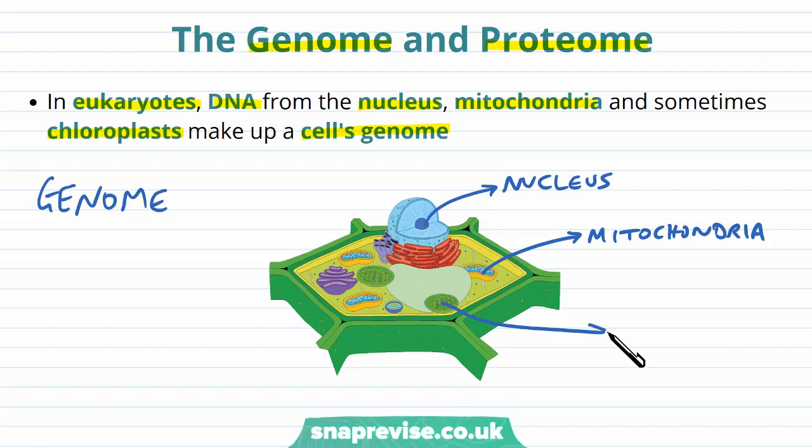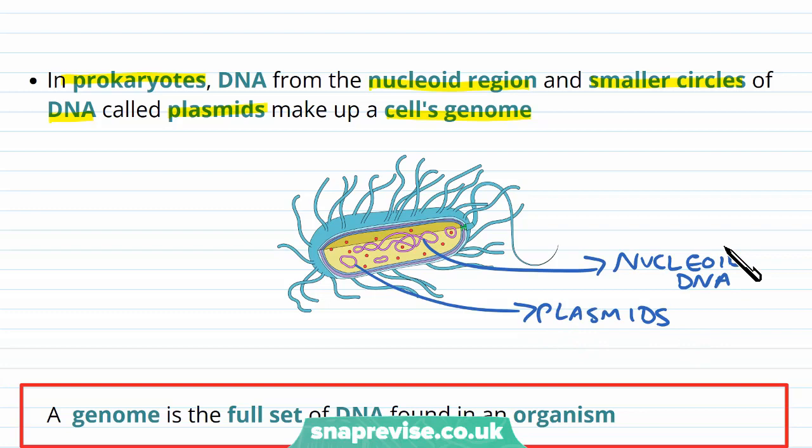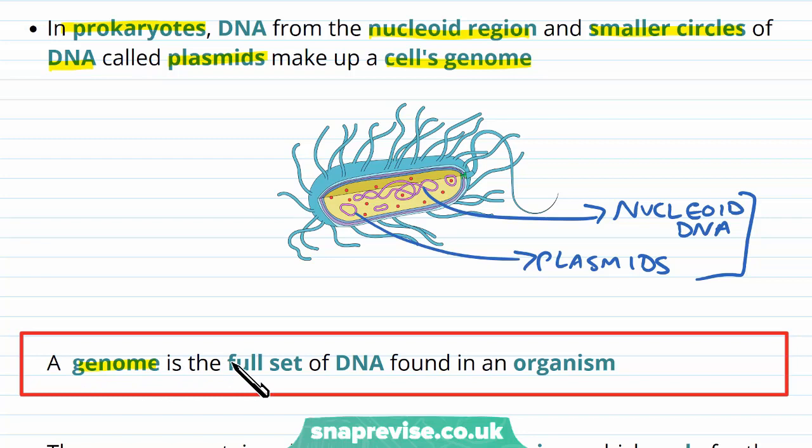In prokaryotes, DNA is made up in slightly different ways. There's a nucleoid region of circular DNA, which is the main DNA. And then there are smaller circles of DNA called plasmids, making up the overall cell genome. So in this case, we have nucleoid DNA and we have plasmids — altogether, this is the prokaryote's genome. By definition, a genome is the full set of DNA found in an organism and all of its different forms.